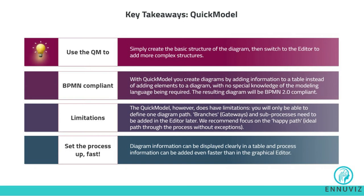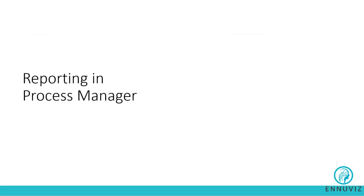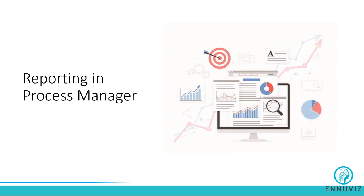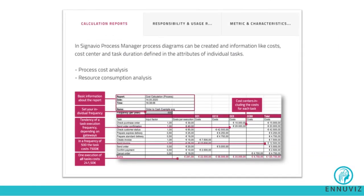Reporting in Signavio Process Manager is divided into three segments. The first is calculation reports. Process diagrams can be created and information like cost, cost center, profit, profit center, and task duration defined in the attributes of individual tasks can be retrieved. You can download reports such as process cost analysis reports and resource consumption analysis reports.